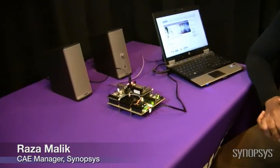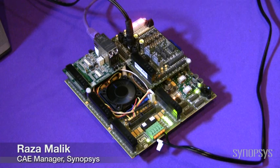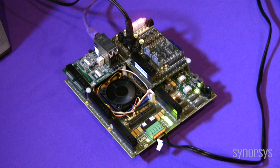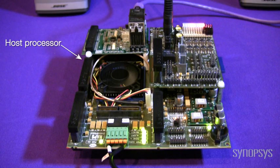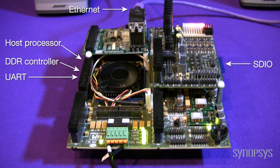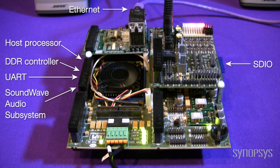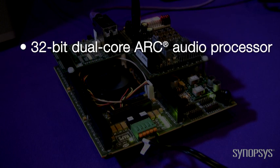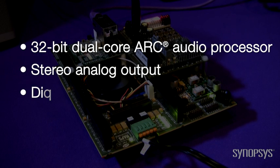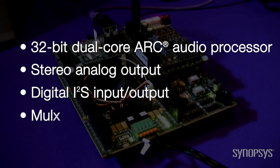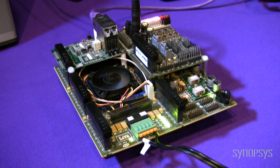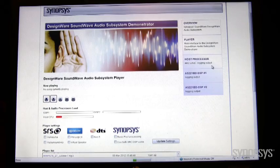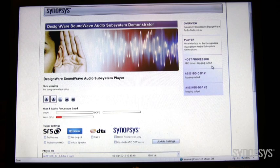What I have here is a HAPS-51 FPGA-based prototyping system, which contains a complete system-on-chip incorporating Synopsys DesignWare IP, including a host processor, DDR controller, SDIO, UART, Ethernet, and of course the SoundWave audio subsystem. The SoundWave audio subsystem configuration inside this HAPS-51 contains a 32-bit dual-core ARC audio processor, stereo analog output, plus digital I2S, and a multi-channel SPDIF input/output. This solution is running on an Android-based platform. With my laptop, I can now remotely control the GStreamer audio application on the host processor, which controls the SoundWave audio subsystem.